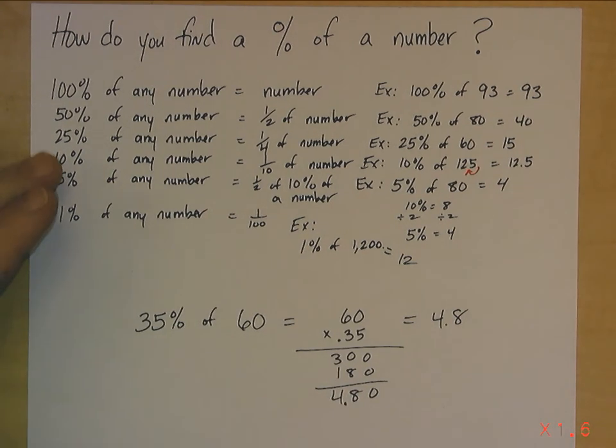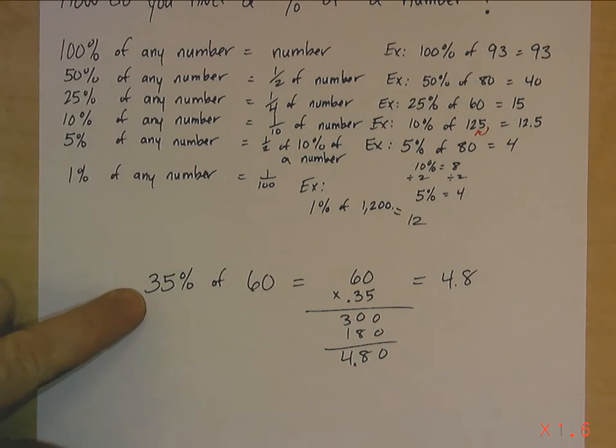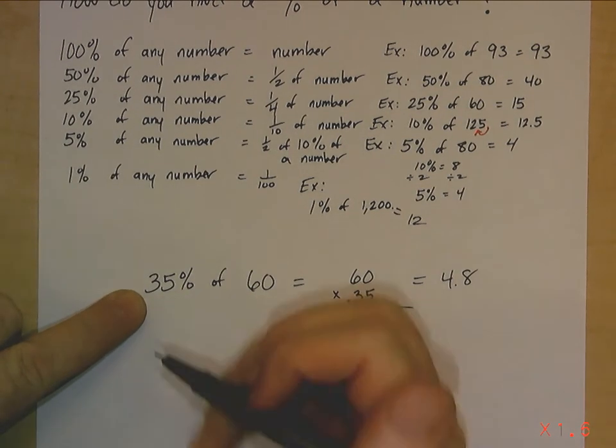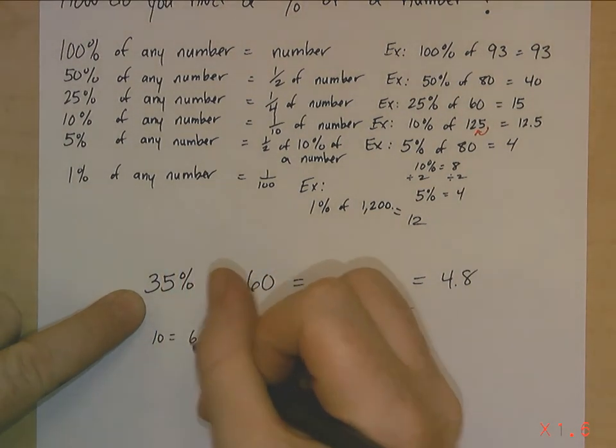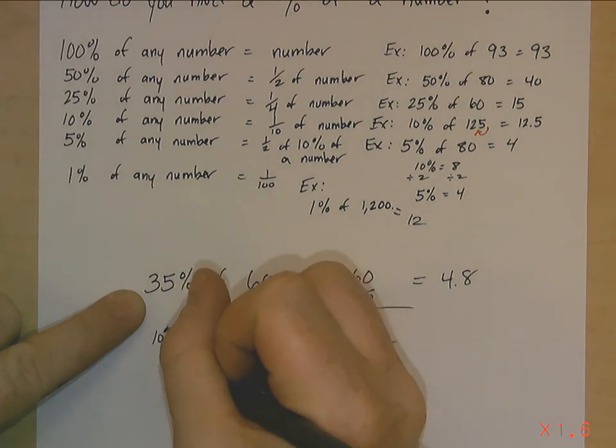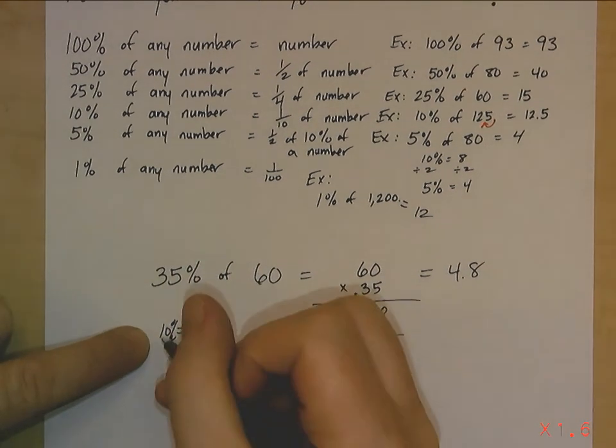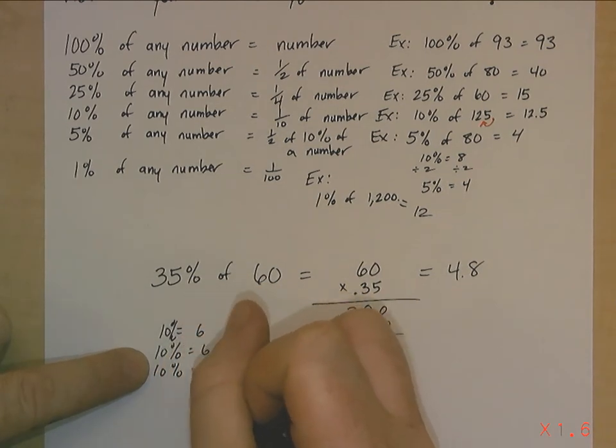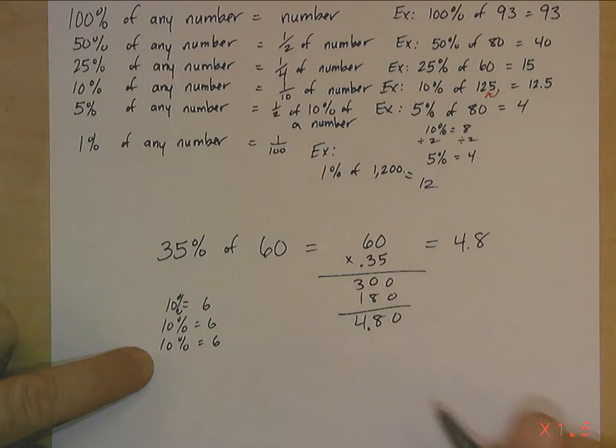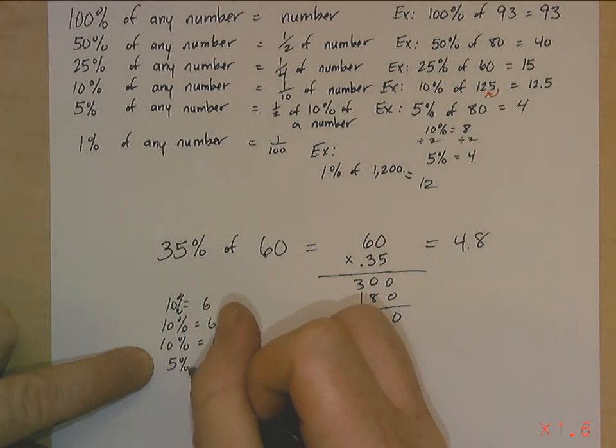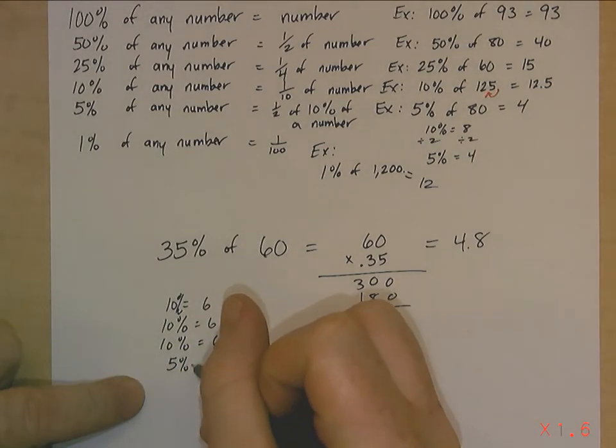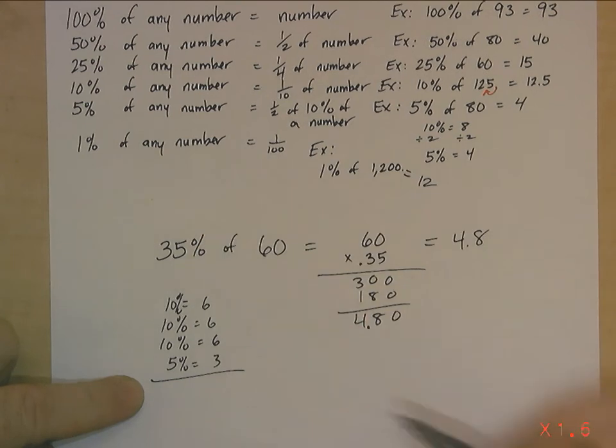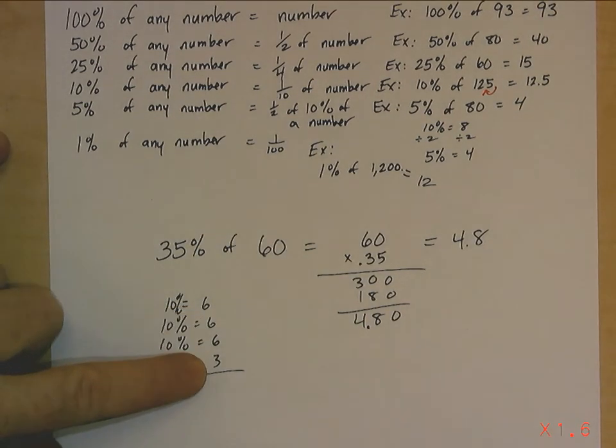But you can also use mental math. 10%, remember, 10% is 6. So 10% equals 6. You got three of those. Because that's 30%, correct? What's half of 6? What's the other 5% that you need for 35%? That's three. Add them up. 6 plus 6 plus 6 is 18. 18 plus 3 is 21.